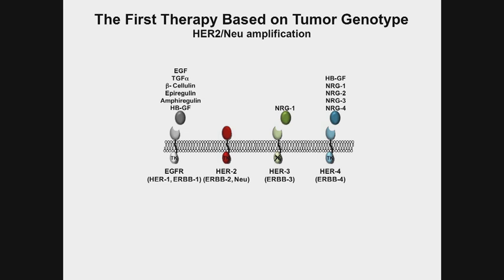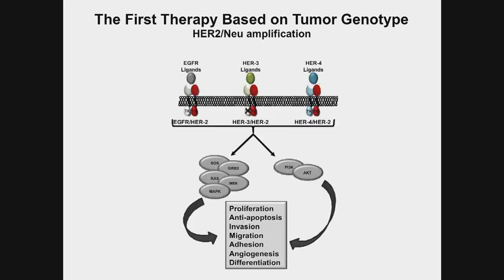HER2 is a protein that sits in the membrane of cells — it's a growth factor receptor. When activated, it becomes an active tyrosine kinase, phosphorylating other proteins, activating pathways important to growth and survival of cells. It's a member of the epidermal growth factor receptor family, which has four members: EGF receptor, HER2, HER3, and HER4, with a whole host of ligands. HER2 works as a partner with the other family members, and in response to ligands turns on pathways important for growth and survival. It causes proliferation, protects cells from cell death, causes invasion and migration, and affects angiogenesis — all features that make sense as a bad prognostic marker.